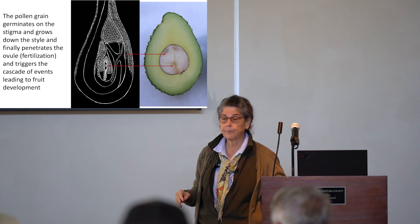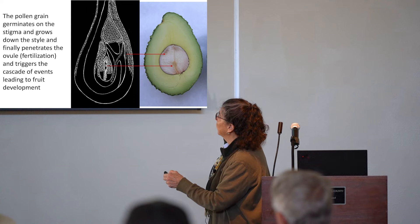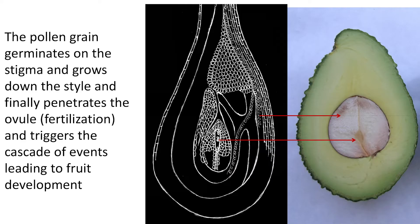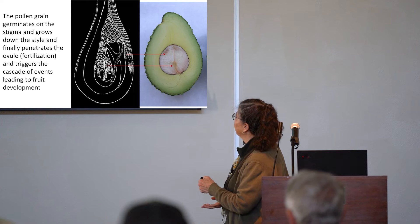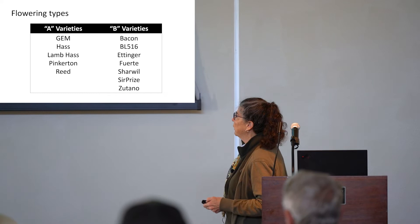Once the pollen tube is growing down, it grows through what is called the transmitting tissue and back up to where fertilization takes place. The outside tissue is maternal tissue — what becomes the skin and flesh of the fruit. The cotyledons are also maternal tissue, but the embryo is the product of fertilization. The situation in the avocado is more complicated: you have a flower that opens first as female, closes, then becomes male.